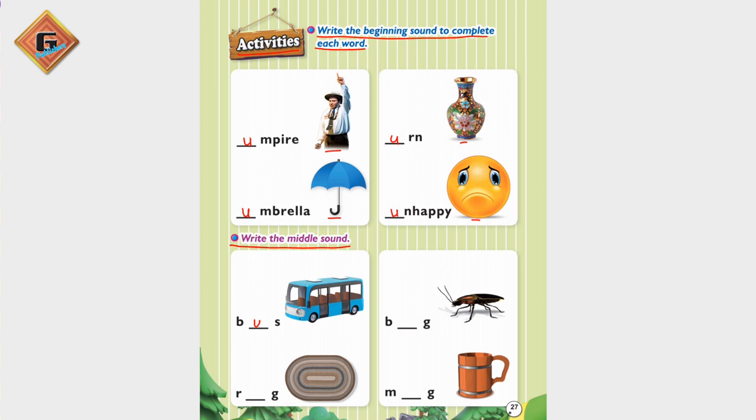The last is rug, R U G, rug. So here we will write U. Now let's read this again. R U G, rug. Now look at this side. It's a bug, B U G, bug.